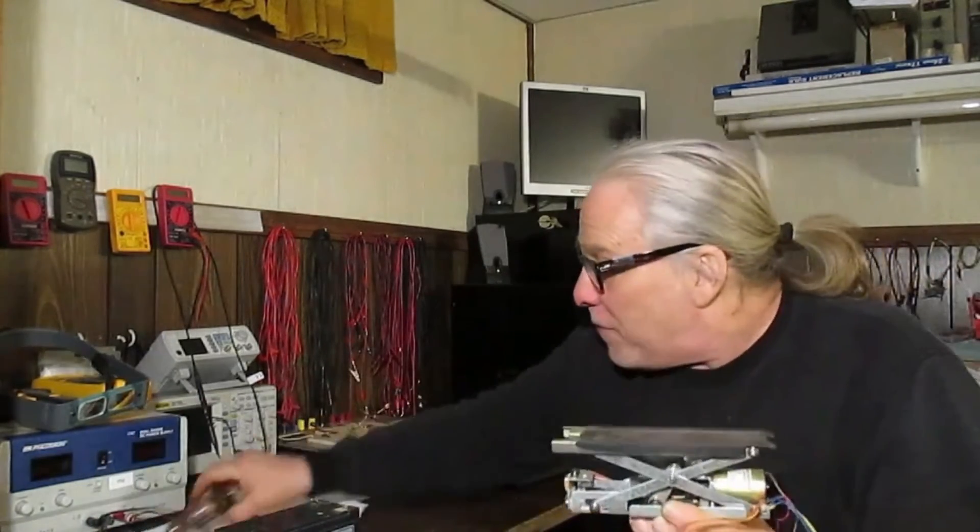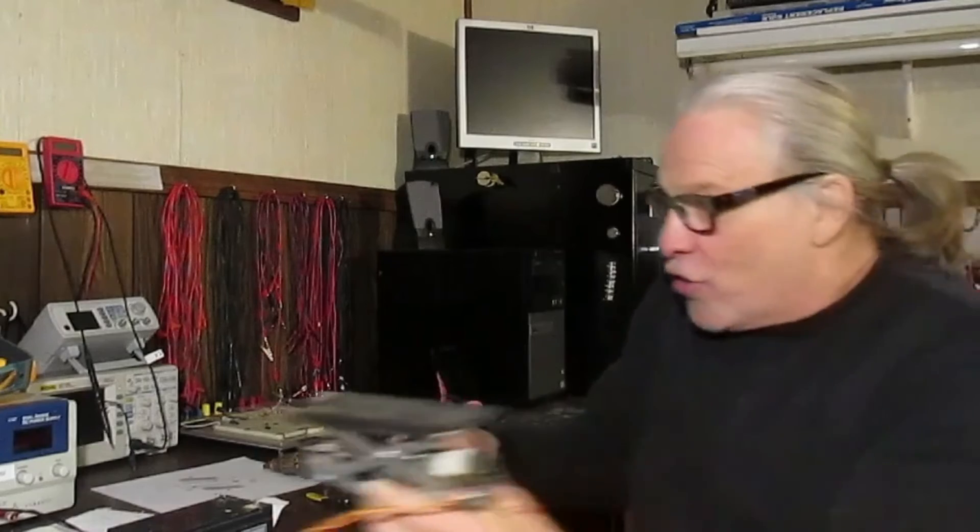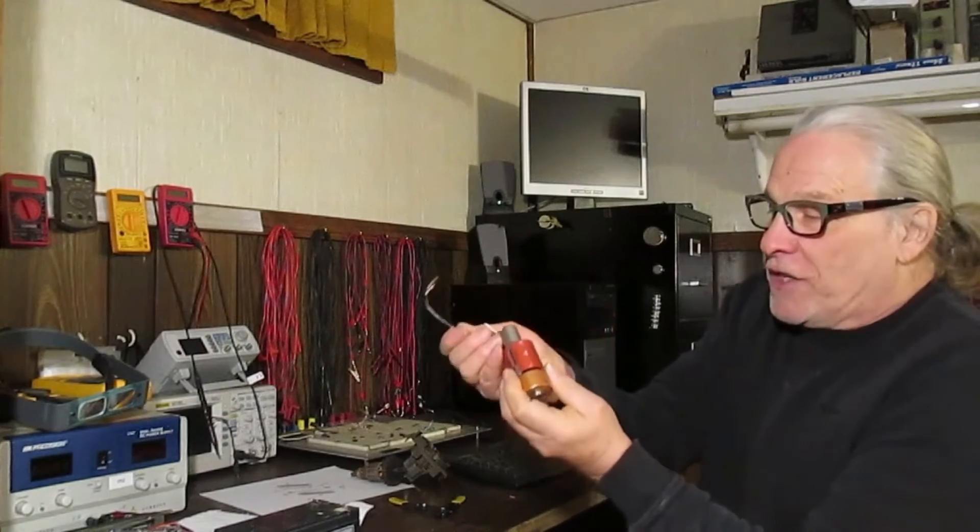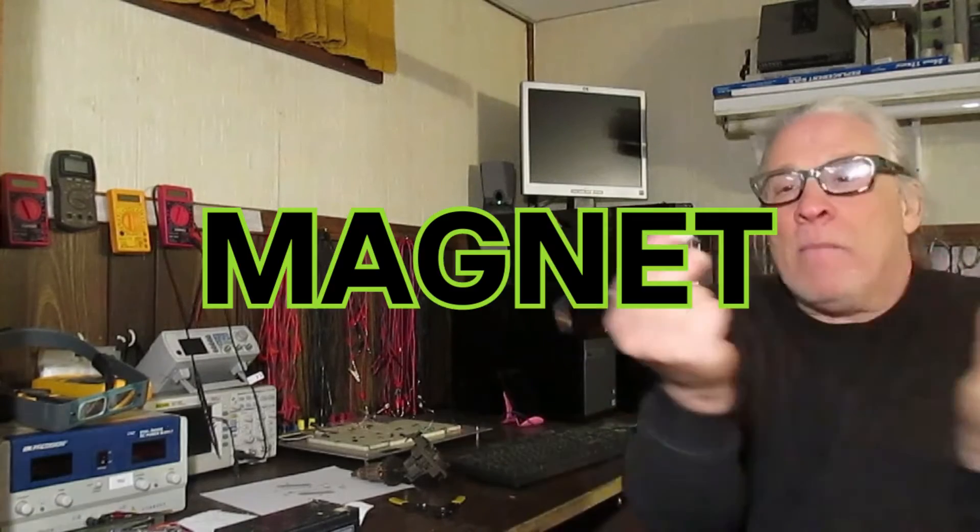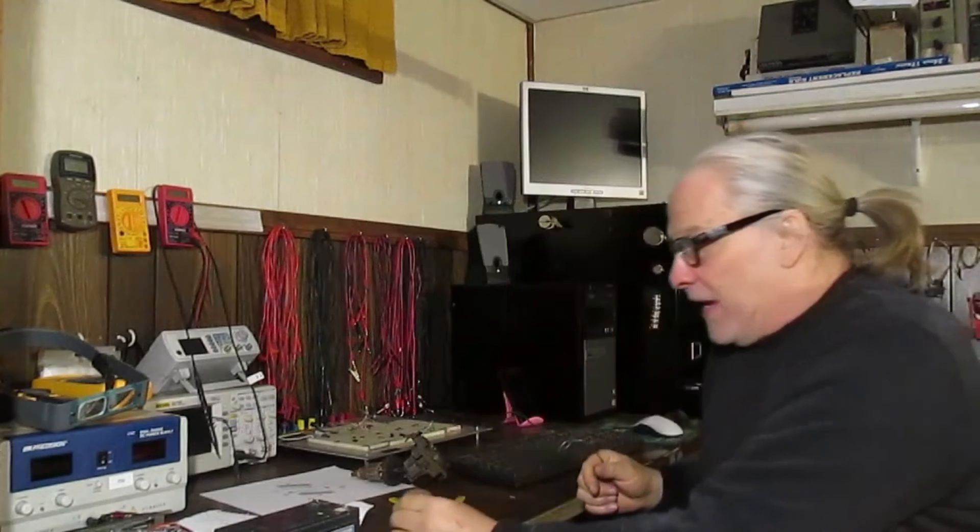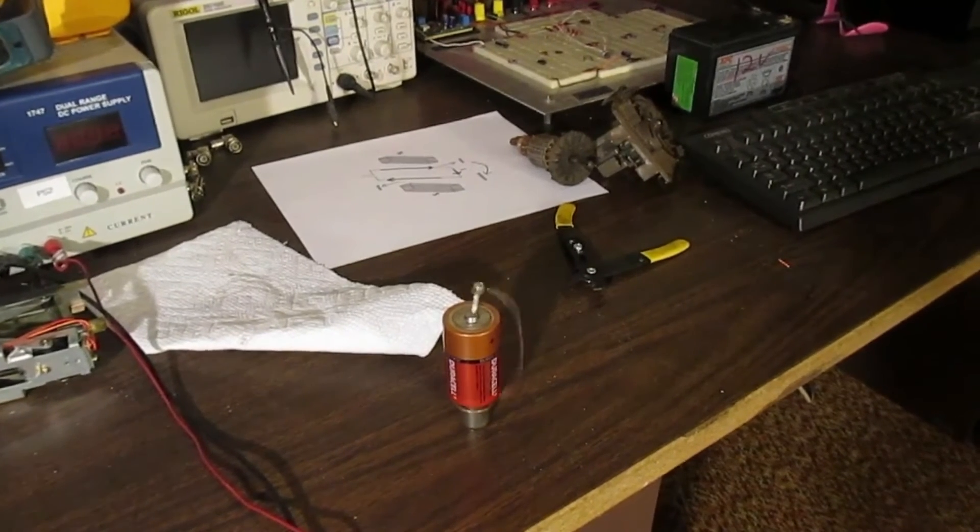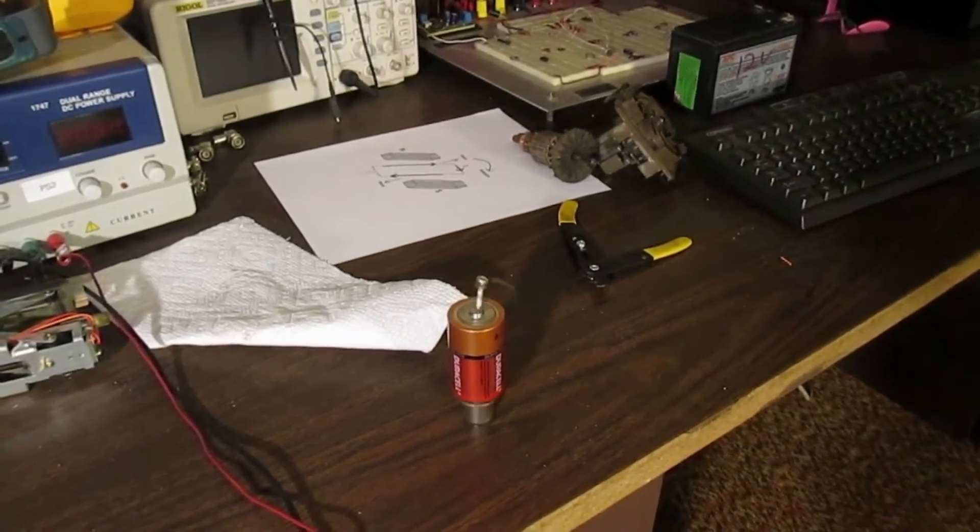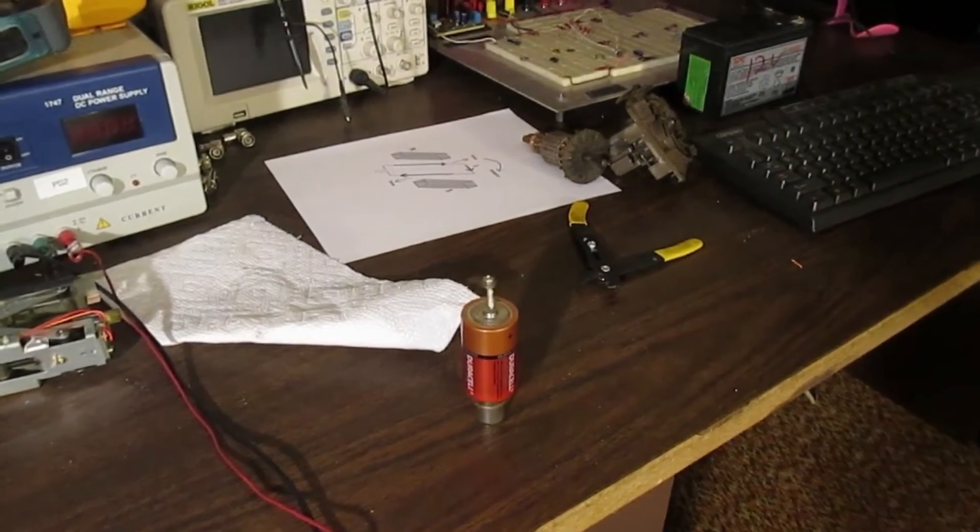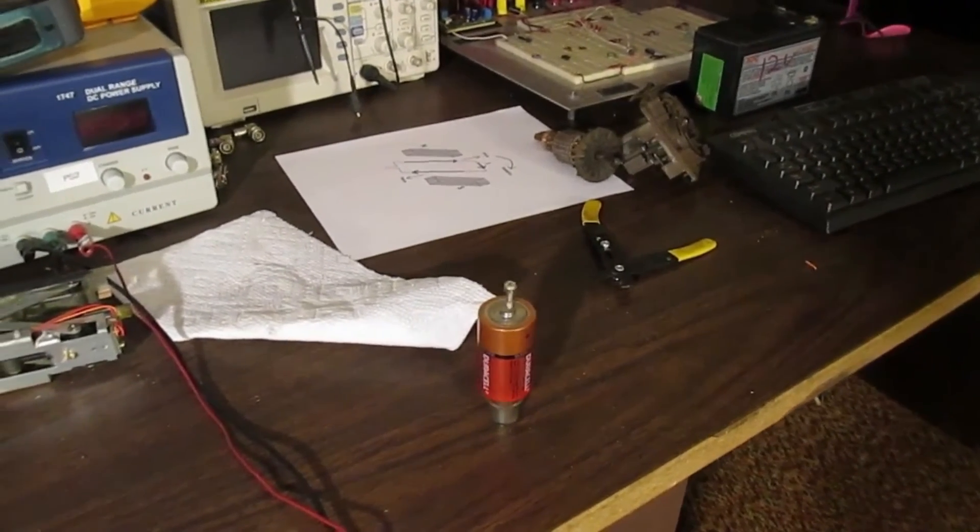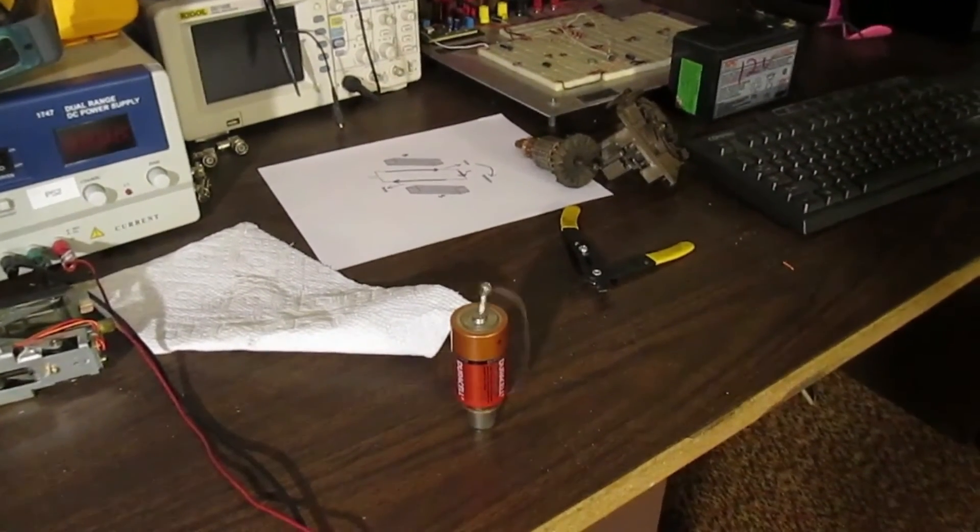The simplest type of motor that we can create requires just three components: a magnet, a battery, and a piece of wire. The piece of wire makes contact between the negative and the positive terminal of the battery and current flows through it. The current reacts with the magnetic field and causes mechanical motion.